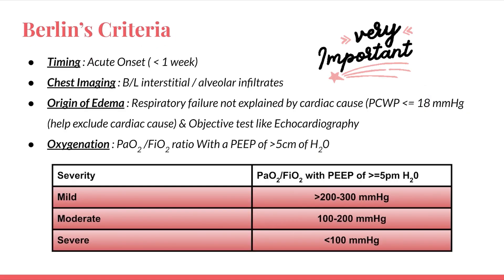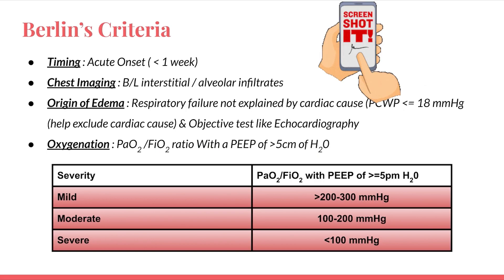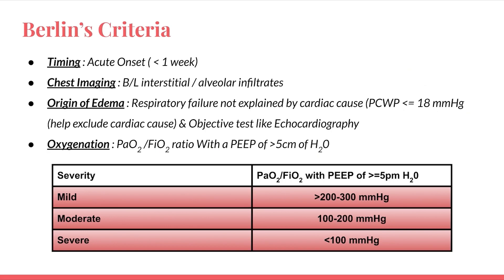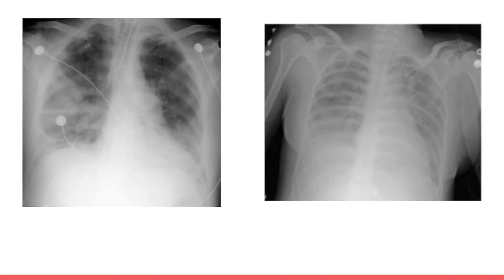The Berlin criteria is the most important part, remembered under four headings: timing, chest imaging, origin of edema, and oxygenation. Timing: acute onset within one week. Chest imaging: bilateral interstitial or alveolar infiltrates. Origin of edema: respiratory failure not explained by cardiac cause — PCWP less than 18 mmHg, confirmed by echocardiography. Oxygenation: PaO2/FiO2 ratio with PEEP more than 5 cm H2O — mild is 200–300 mmHg, moderate is 100–200 mmHg, and severe is less than 100 mmHg.